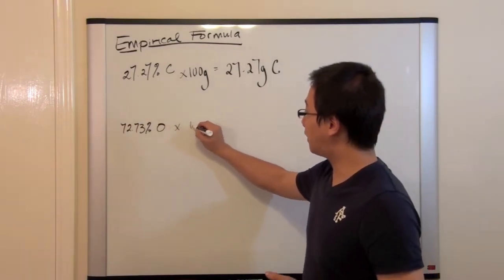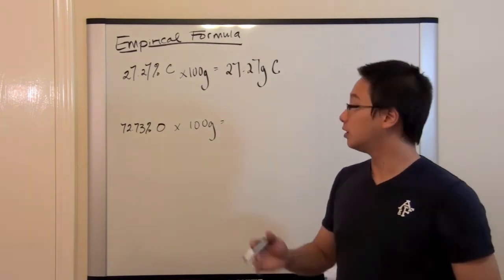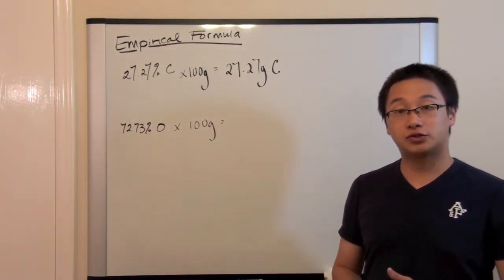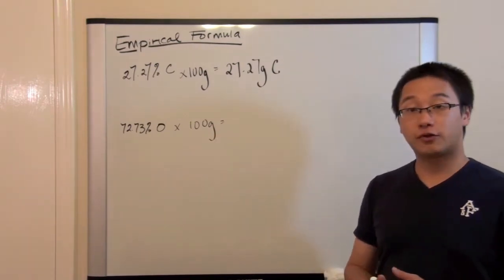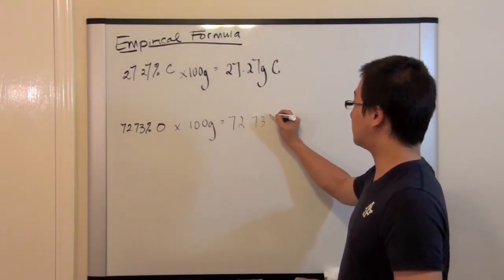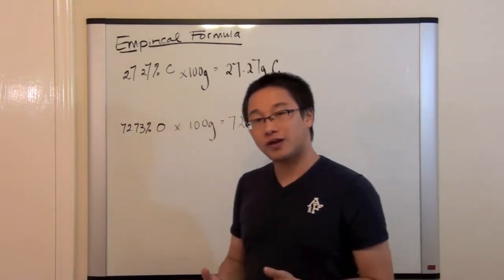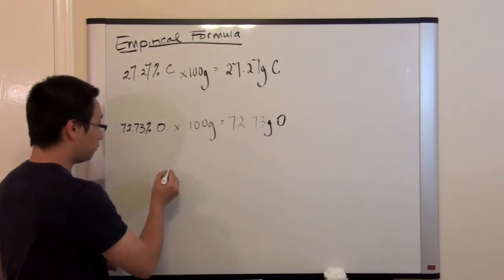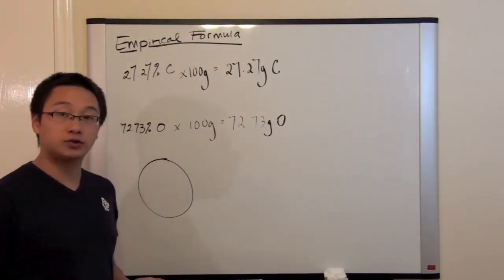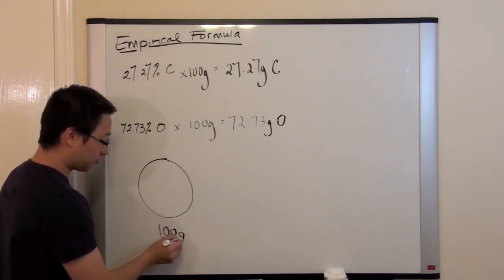And we have same calculation for the oxygen. So we have 72.73 percent of oxygen times 100 grams of the compound. So one way to think about this is that if you have a compound, and I'm going to use a pie chart to represent the compound, the whole thing is 100 grams.